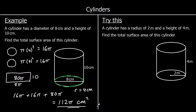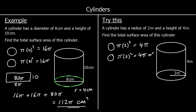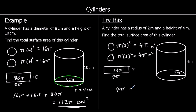So again, the total surface area. We've got two circles; their area is pi r squared, so pi times 2 squared in this example. 2 squared is 4, so that's 4 pi metres squared. And we've got a rectangle with a height of 4 and a length of either 2 pi r or pi times d. The diameter is 4, so 4 pi. So the rectangle's area is 4 times 4 pi, which is 16 pi. So we've got 4 pi plus 4 pi plus 16 pi, which is 24 pi metres squared.